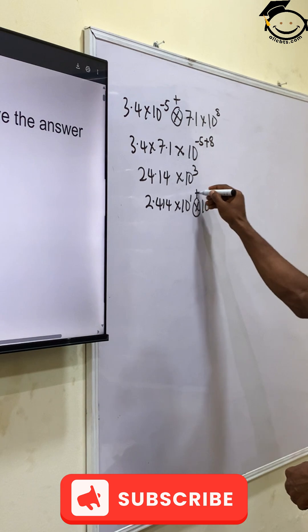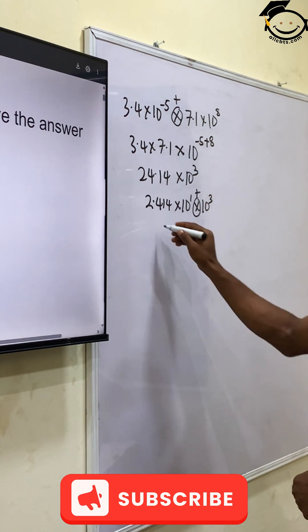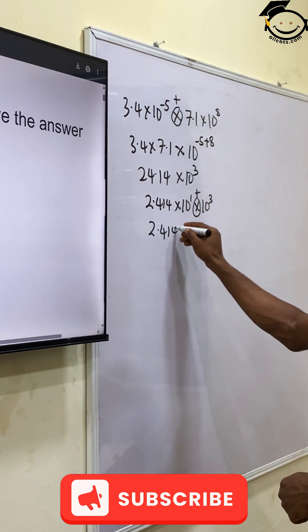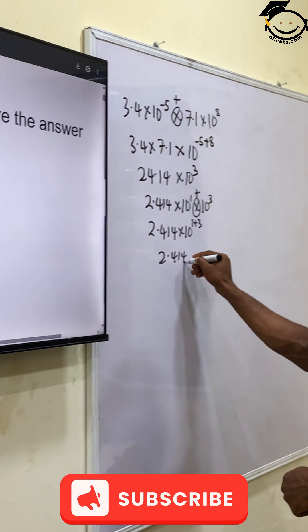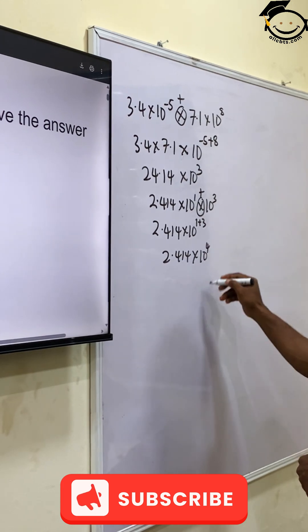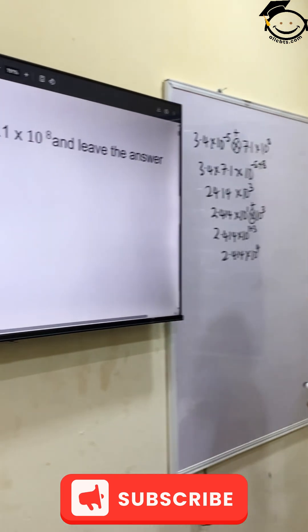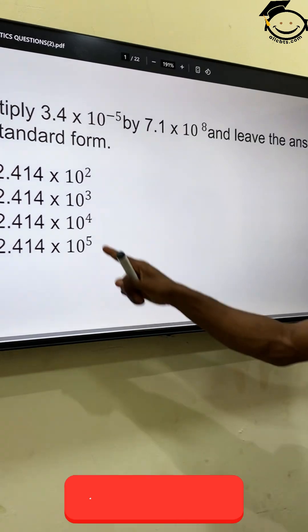Applying the same law, multiplication turning to addition becomes 2.414 times 10 raised to the power 1 plus 3, which is 2.414 times 10 raised to the power 4. This is option C.